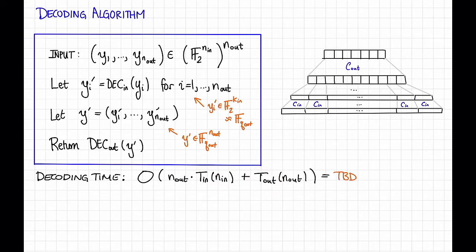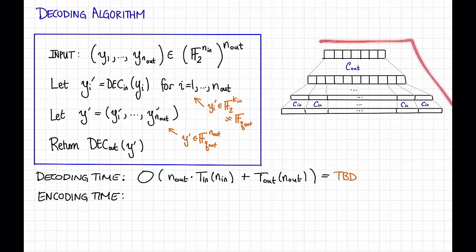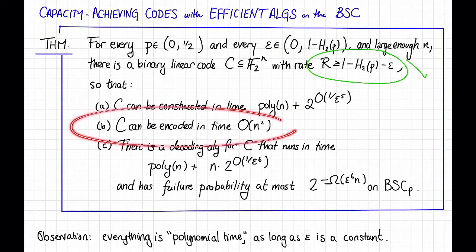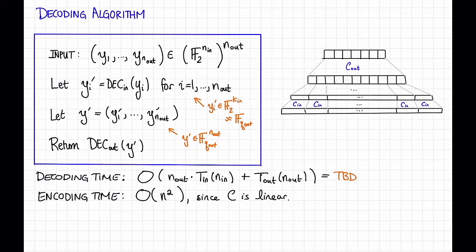The decoding time is big O of n_out times T_in(n_in) — since we run the inner decoder n_out times — plus T_out(n_out) for running the outer decoder once. We'll leave the total decoding time as TBD for now. The encoding time: since C_in is a linear code, the entire concatenated code is also linear. Encoding any linear code just requires multiplying by a generator matrix, so encoding time is big O of n squared.